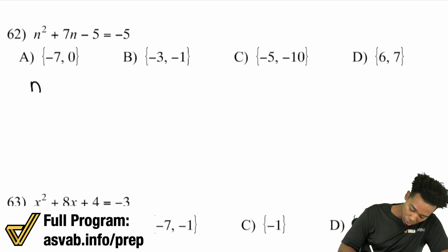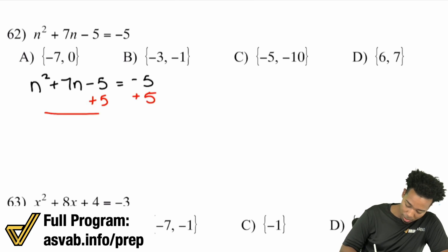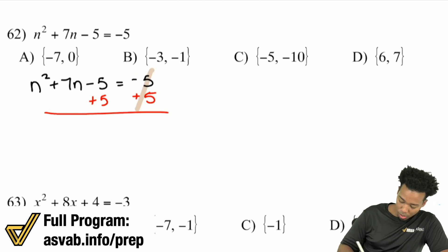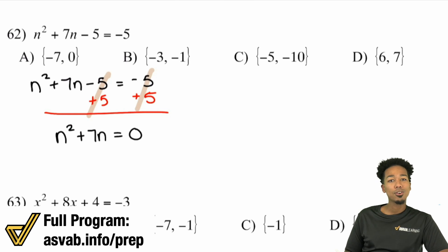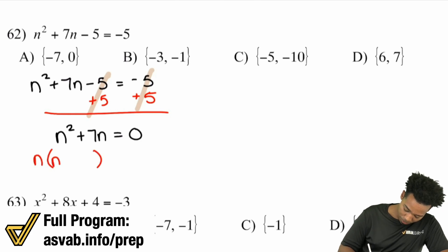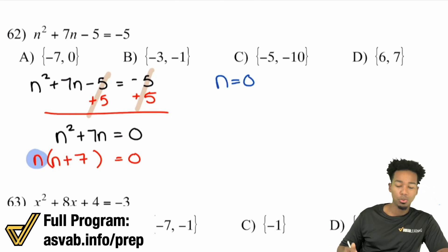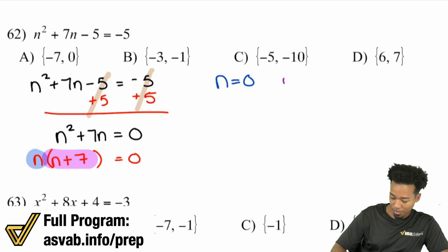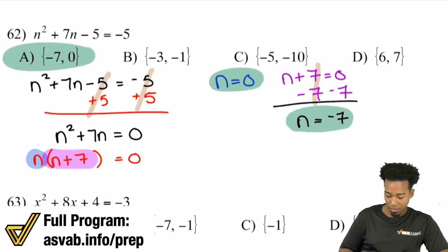We have n squared plus 7n minus 5 equals negative 5. I'm going to add 5 to both sides because I want to get rid of that negative 5 on the left. It cancels out on the right too. So what we have is n squared plus 7n equals zero. Now we'll use the greatest common factor — factor out n from both, leaving n plus 7 on the inside, equal to zero. Apply the zero product property: set n equal to zero — no work needed there — and set n plus 7 equal to zero, subtract 7 on both sides, giving us n equals negative 7. So the answers are n equals 0 and n equals negative 7.